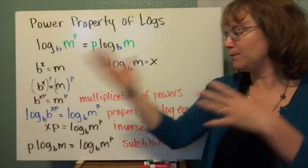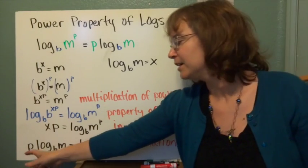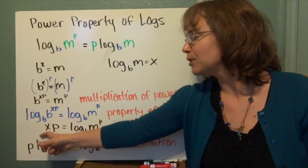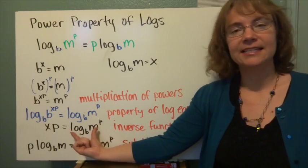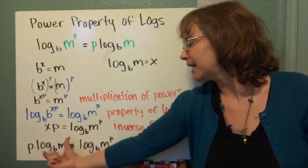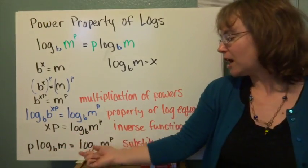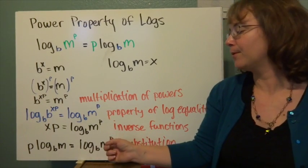Then I use the commutative property and put the p first. So p times log base b of m equals log base b of m to the p. The power times the logarithm equals the logarithm of m to that same power.